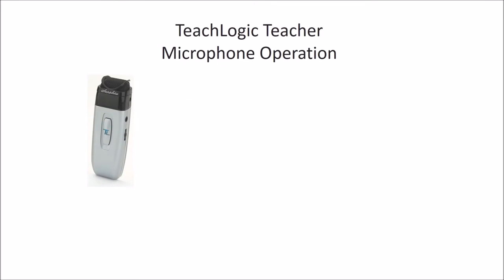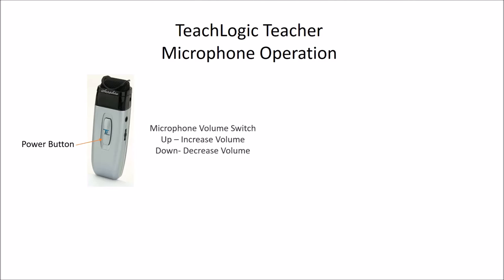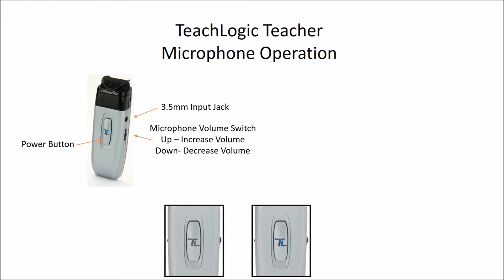Your teacher microphone features a power button in the middle that glows blue when on, a volume control on the side, as well as a 3.5mm input for mobile devices. To momentarily mute your microphone, tap the center power button once and the light will begin flashing. To undo this, tap the button again.